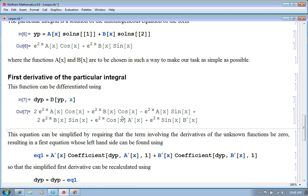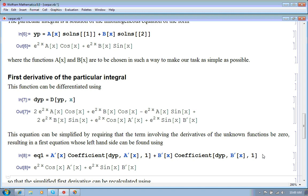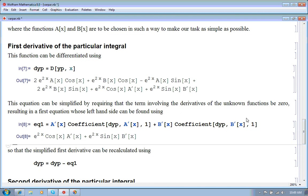And one obvious thing to require is that the terms involving the derivatives A of x or A prime and B prime should be zero. So, let's extract that using this. So, we take the coefficient of A prime in this equation and multiply it by A prime and so on. And that has to be zero. So, that's our first equation. It's a linear equation connecting the two derivatives or the derivatives of the two functions A of x and B of x.